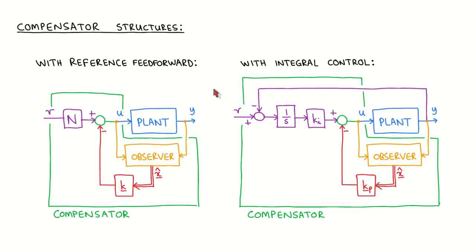We began this module by describing the dynamics of the plant as a state variable model. We then went on to analyze the dynamics of the plant in several ways. Lastly, we looked at designing a state variable compensator and we considered two possible structures, one with reference feed forward and the other with integral control. The observer, which estimates the plant states, and the state feedback, which determines the closed-loop poles, are the same between the two structures. Only the way the reference input is incorporated differs.